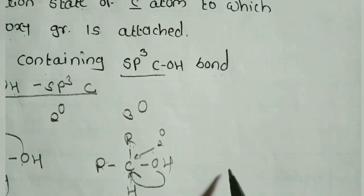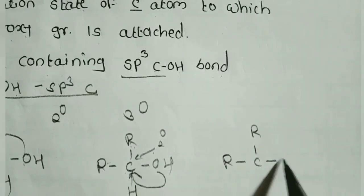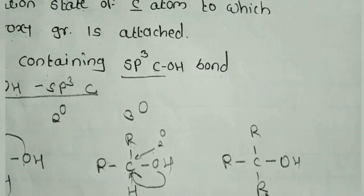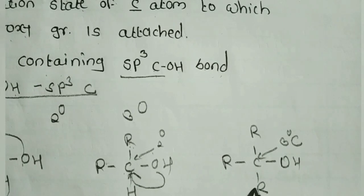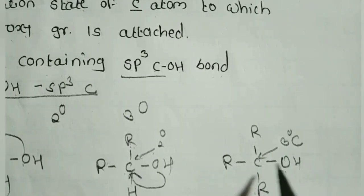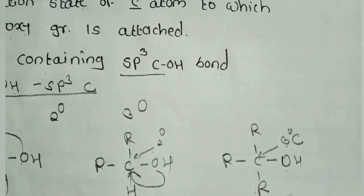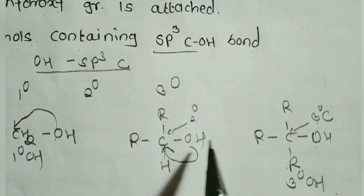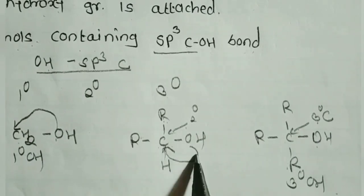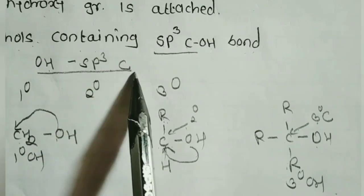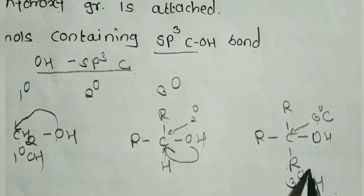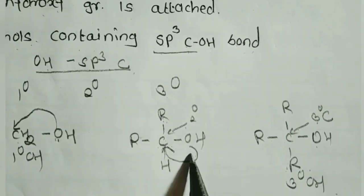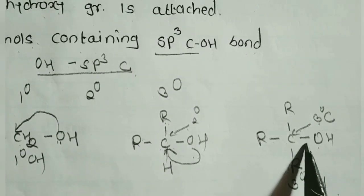In tertiary alcohol (R3C–OH), all three hydrogens are replaced by alkyl groups, making it a tertiary carbon, and the OH is attached to that tertiary SP3 carbon — hence it is called tertiary alcohol. All three carbons — in primary, secondary, and tertiary alcohol — are SP3 hybridized because they are attached to only single bonds.